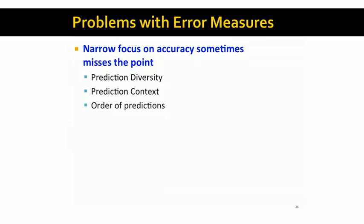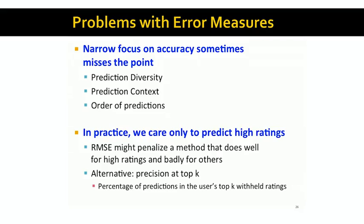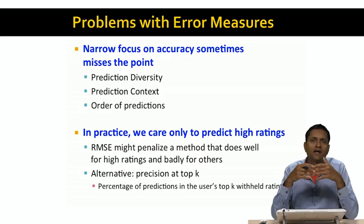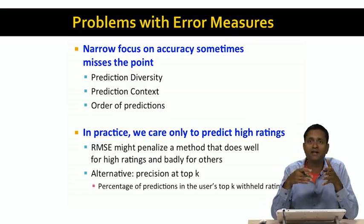Note also that in practice, we only care to predict high ratings. So, we've set up this whole problem of predicting the rating of a user x for an item i. But in practice, we don't really care what the rating of user x for item i is, if that rating value is low and the user really doesn't like the item. We are only going to recommend items to the user that the user really cares about. And so, we only care to predict high ratings,